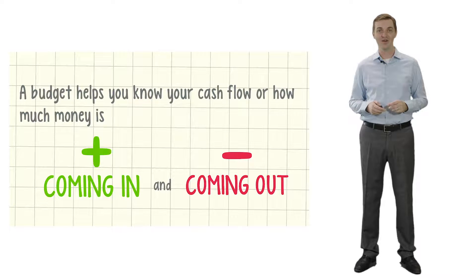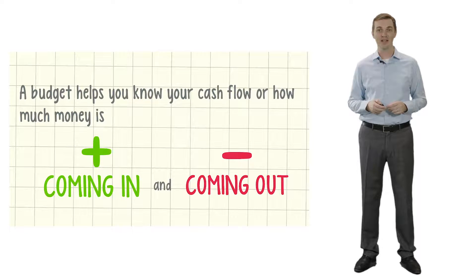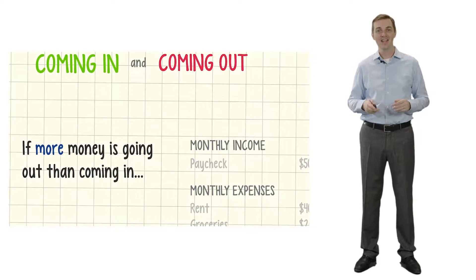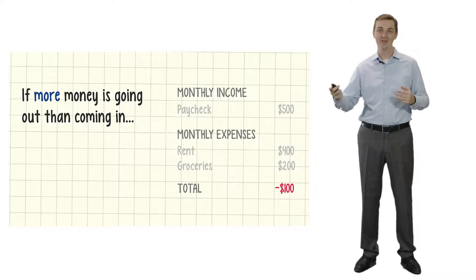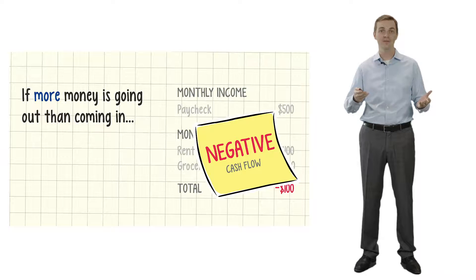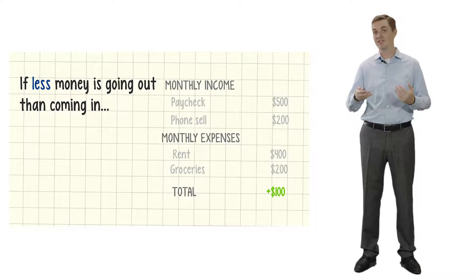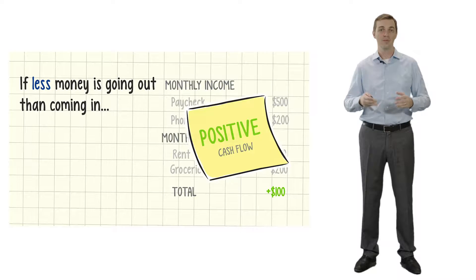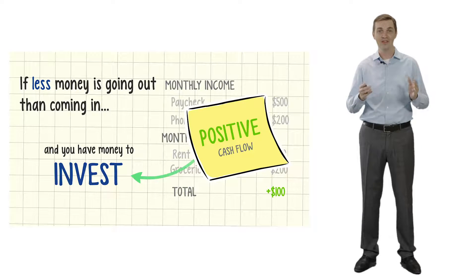A budget helps you know where your cash flows go and how much money is coming in and coming out during a period of time. If more money is going out than is coming in, you have what we would call negative cash flow, which is a problem. And if less money is going out than is coming in, you would have positive cash flow, and there you would be able to save and have money to invest.